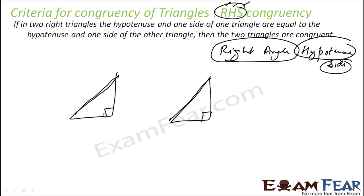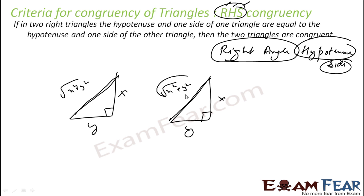If you see, even if these two sides are equal and the angle is 90 degrees, the triangles have to be congruent. Suppose the sides are x and y; the hypotenuse will be √(x² + y²). Since lengths are always positive, there is no concept of a negative value, so the hypotenuse has to be equal as well.